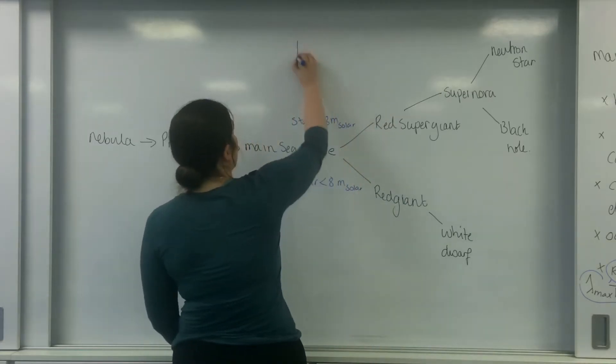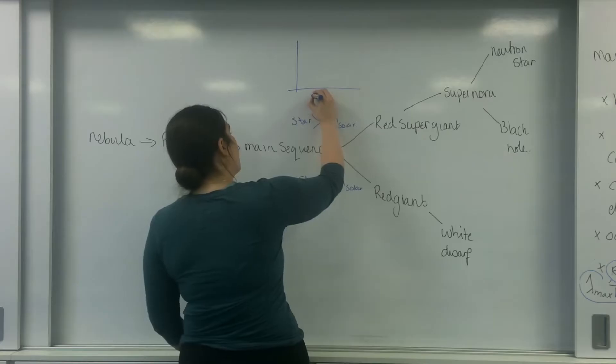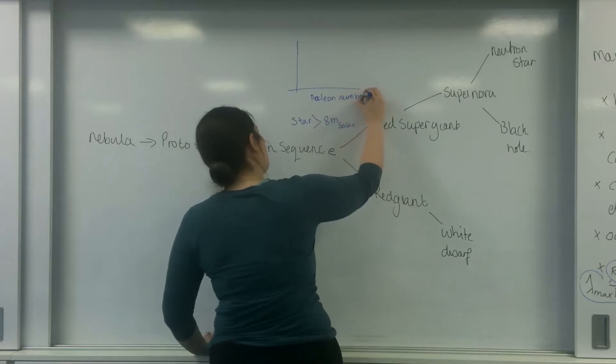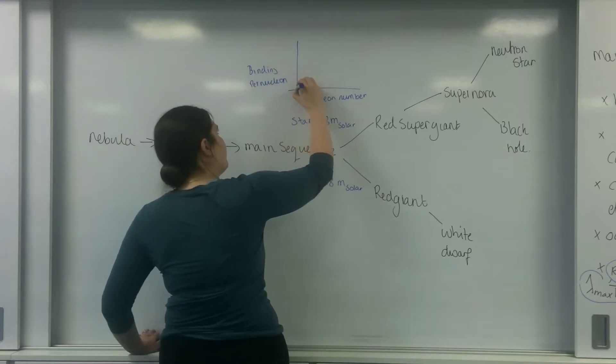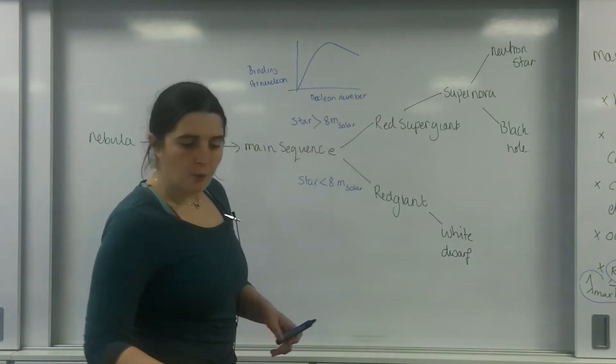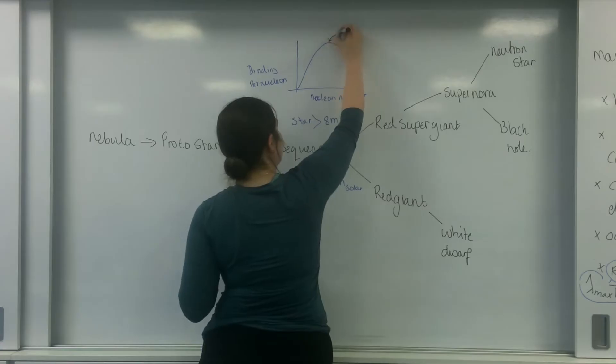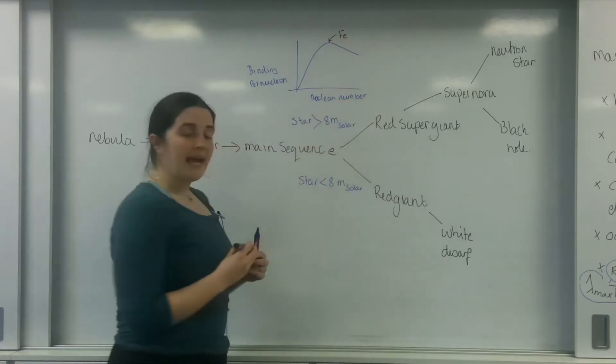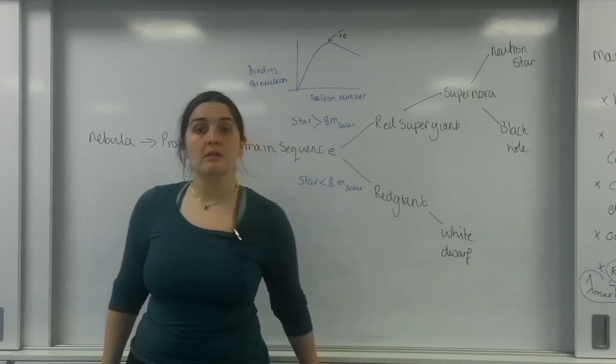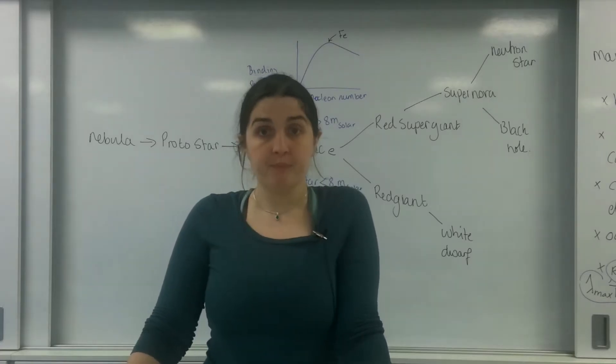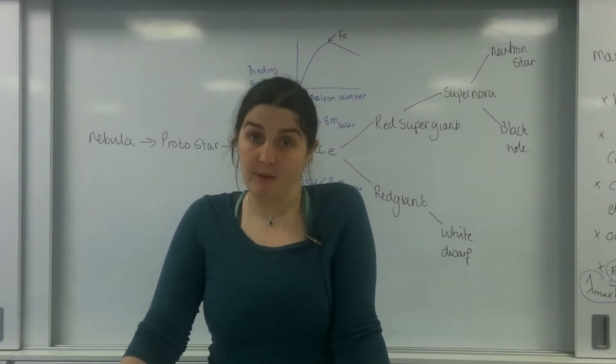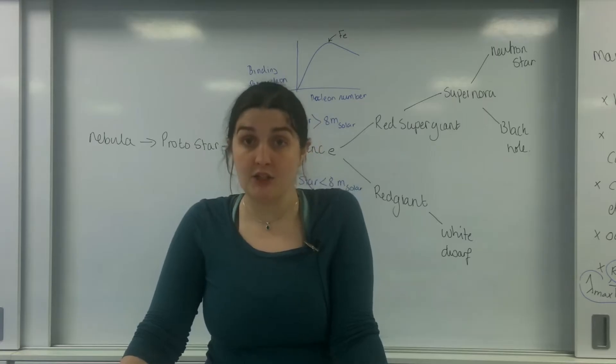But from nuclear physics, if we look at the nucleon number versus the binding energy per nucleon, you have a graph that looks like this which peaks at iron. Elements, when they decay or fuse, want to become more stable. They want to have more binding energy per nucleon. Iron is the most stable element. It has the highest value of binding energy per nucleon.